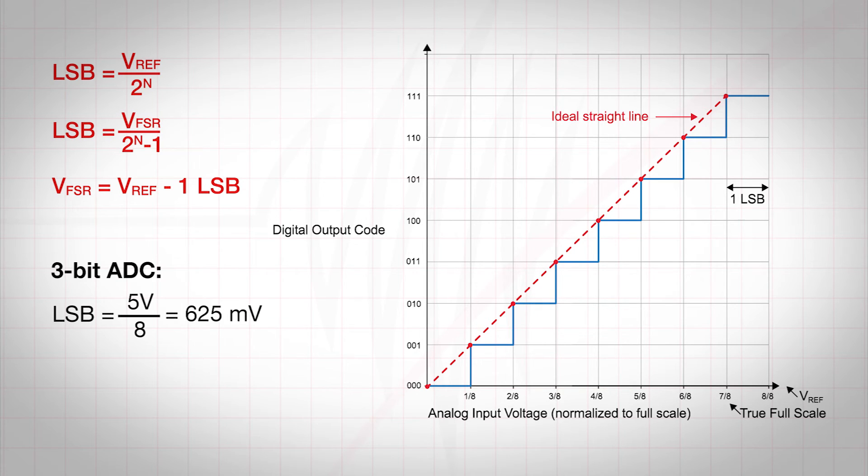With a 5-volt voltage reference, a 3-bit ADC would have an LSB of 625 millivolts, and an 8-bit ADC would have an LSB of 19.531 millivolts.